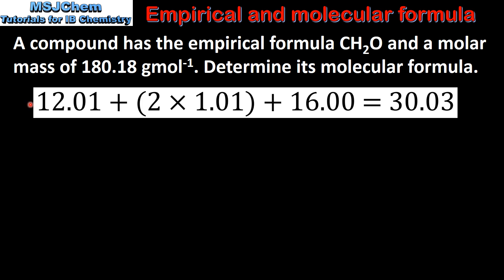The first step is to add up the relative atomic masses of all the atoms in the empirical formula. In this empirical formula there's 1 carbon atom, 2 hydrogen atoms, and 1 oxygen atom. So we add up the relative atomic mass of 1 carbon atom, 2 hydrogen atoms, and 1 oxygen atom which gives us 30.03.